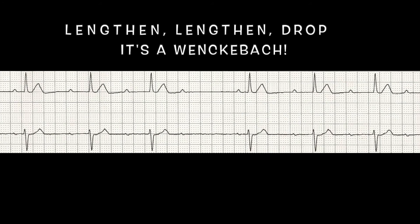If you compare this to your first degree heart block — I'll link that video in the right-hand corner — your first degree heart block does have an abnormally long PR interval, but it's the same for every beat. However, with a Wenckebach the PR interval continues to lengthen until an entire beat is dropped. I hope this clears up the difference between a first degree and a second degree Mobitz 1.